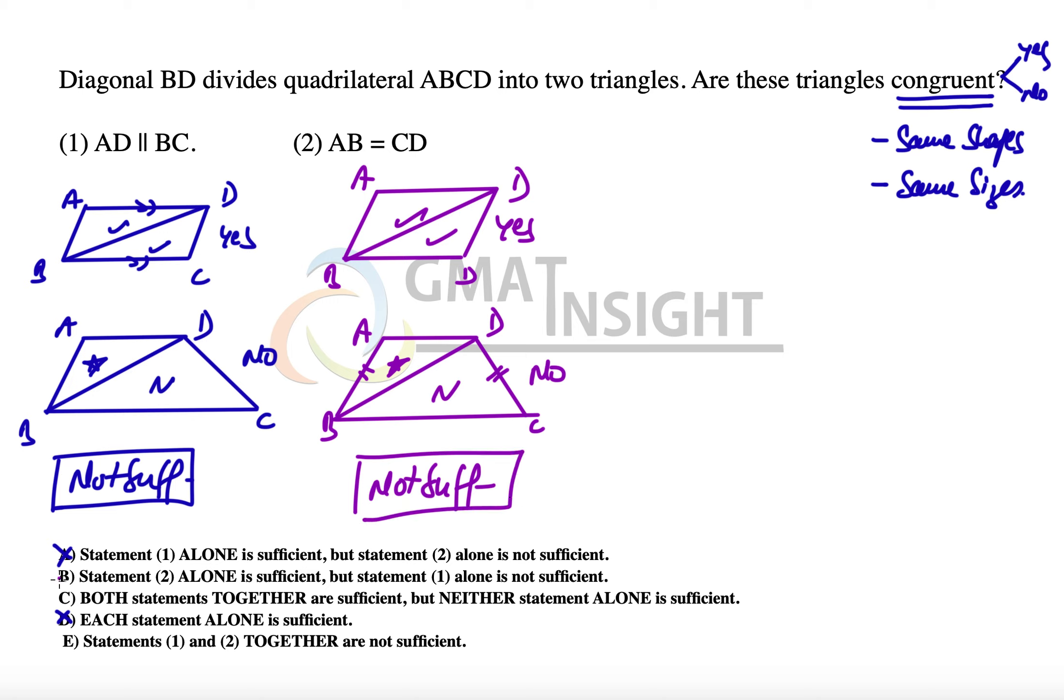In this question, in fact, combining the two statements is quite simple, because even if we look at the two statements together, we can see that the figures taken in the second statement are still valid. Because in both these two figures I have always taken AD parallel to BC, and in both the figures AD is parallel to BC and AB is equal to CD in both the cases.